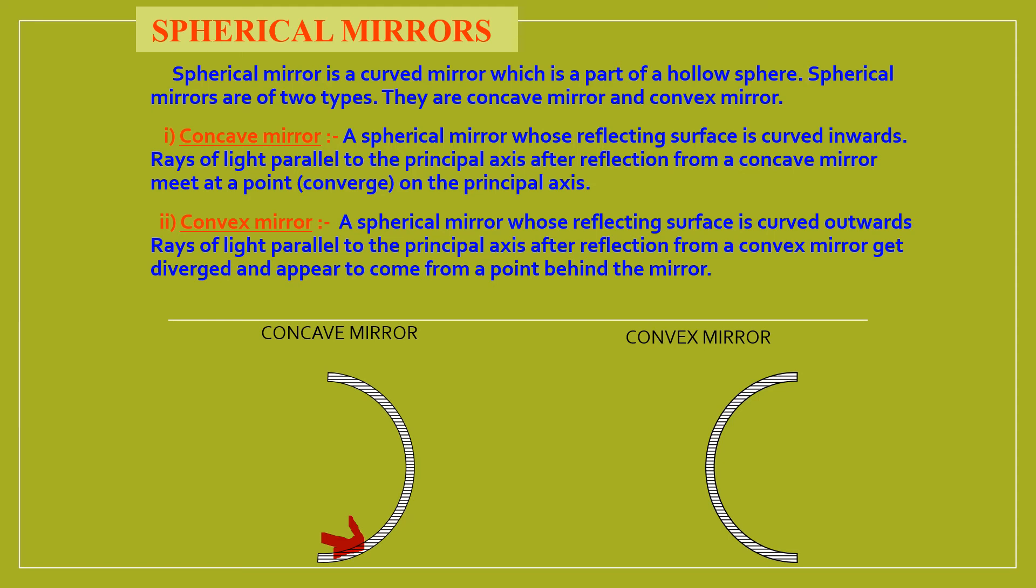A convex mirror is a spherical mirror whose reflecting surface is curved outwards. This is the reflecting surface. Rays of light parallel to the principal axis after reflection from a convex mirror get diverged and appear to come from a point behind the mirror. Let us look at this.